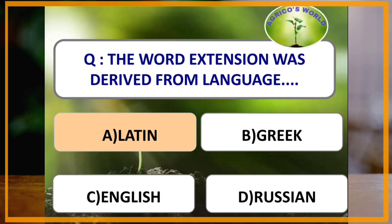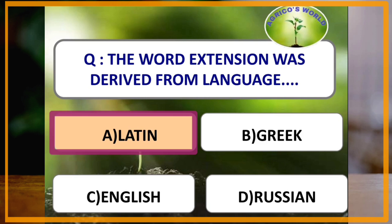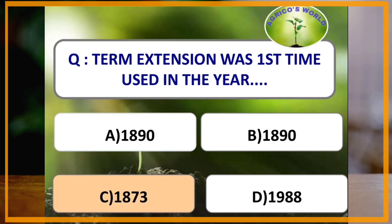Here we are with our first question. The word 'extension' was derived from which language? The word extension was derived from Latin language. 'Ex' means out and 'tension' means stretch. The term extension was first used in the year 1873 in Cambridge University in England to describe a particular system dedicated to dissemination of knowledge to rural people.